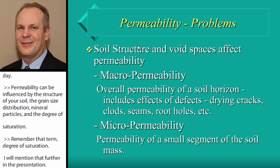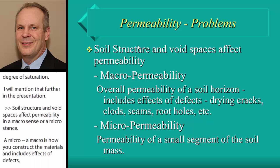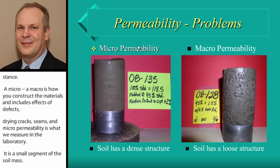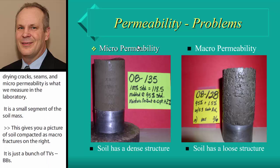Soil structure and void spaces affect permeability in both a macro and micro sense. Macro permeability relates to how you construct and maintain materials, including effects of drying cracks, clods, seams, root holes, rodents, etc. Micro permeability — what we measure in the laboratory — is just a small segment of the soil mass reflecting granular flow. A slide shows compacted soil with macro fractures, with water flowing through the voids.